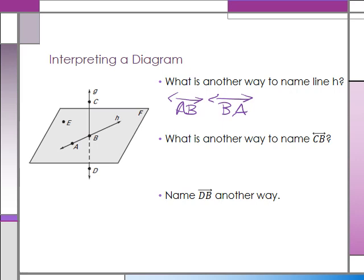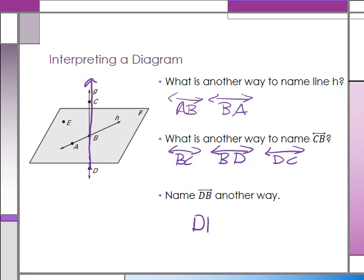Line CB can be named a couple of different ways: we can name it BC, we can name it BD, because all we need to name a line is two points. We can even name it DC. For ray DB, it starts here and goes through here, so it's also going to go through point C — so we can name it ray DC.